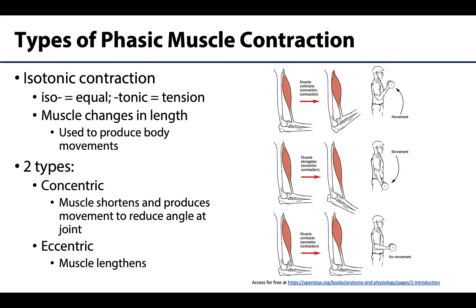The other major type of contraction is isotonic contraction. This is the type of muscle contraction where the muscle does change in some form in length, and there is movement. So those are the two keys: there's a change in length, and movement is occurring.